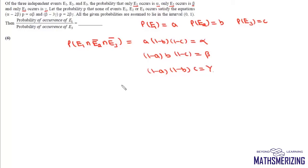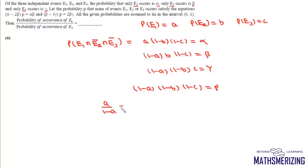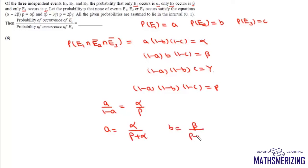The probability that none of e1, e2, e3 occurs is (1 minus a)(1 minus b)(1 minus c), which equals p. Dividing the first expression by p, we get a upon (1 minus a) equals alpha upon p. Applying componendo and dividendo, we get a equals alpha upon (p plus alpha). Similarly, b equals beta upon (p plus beta), and c equals gamma upon (p plus gamma).